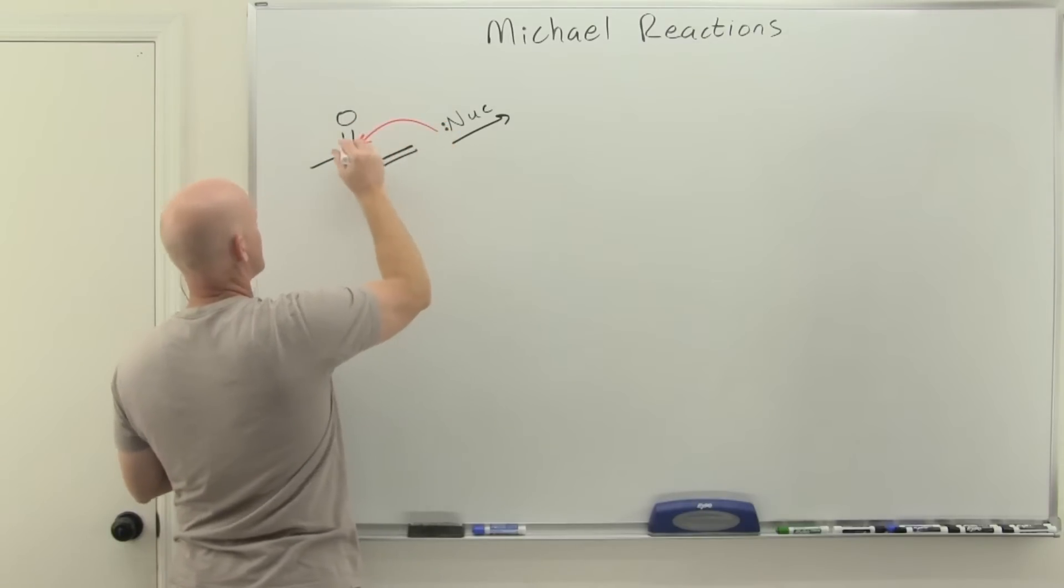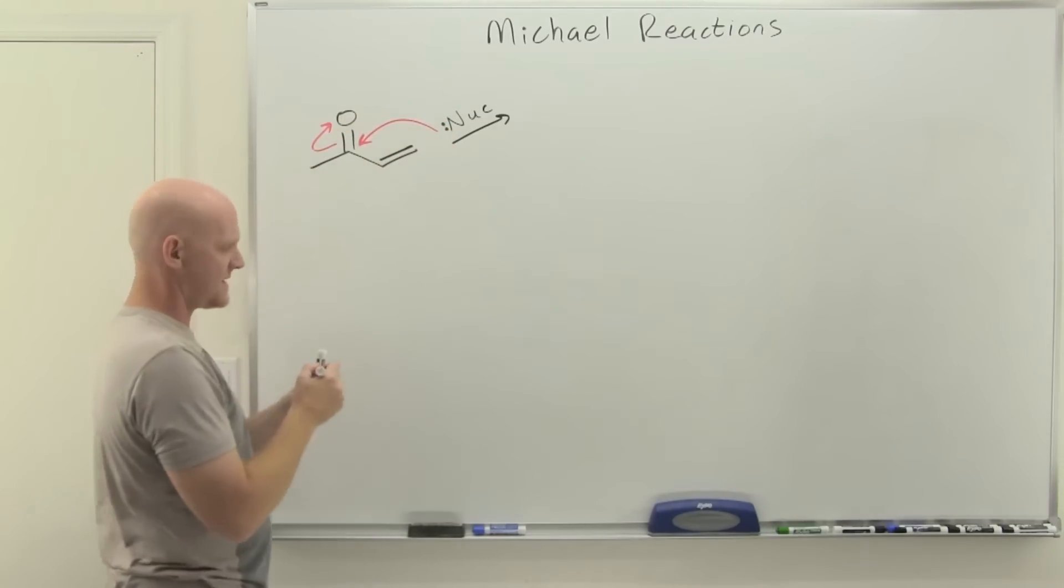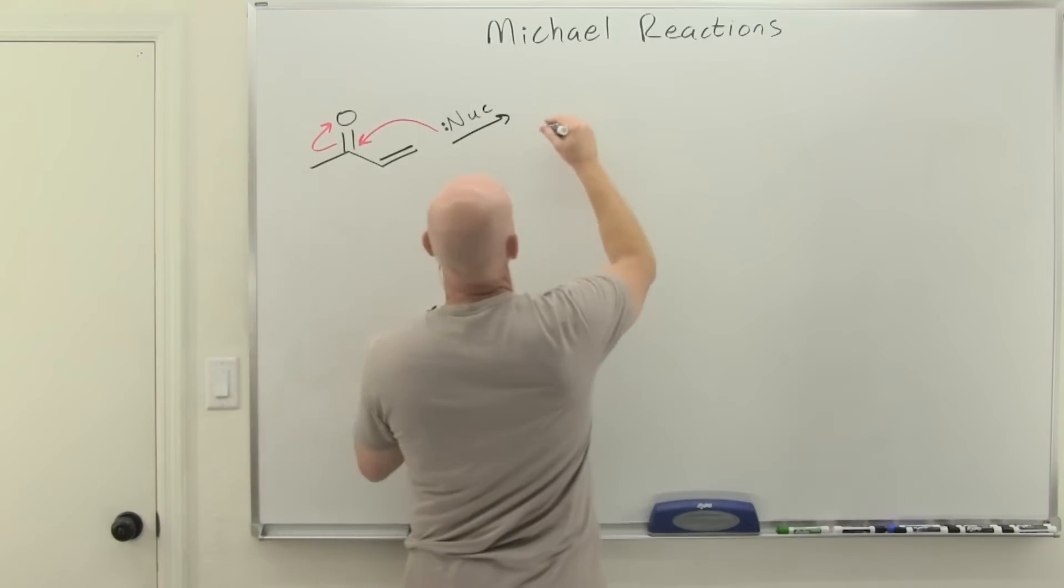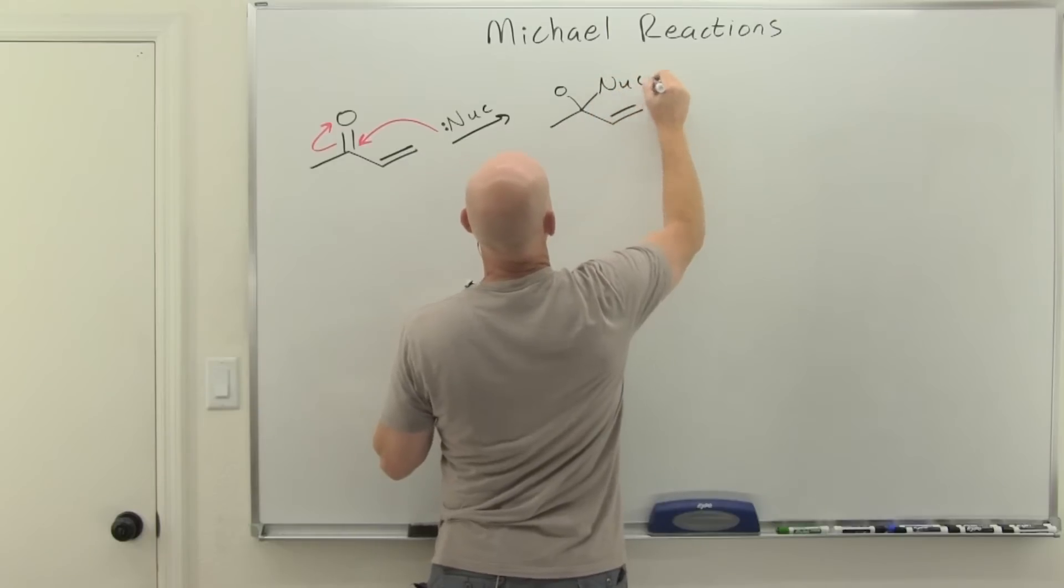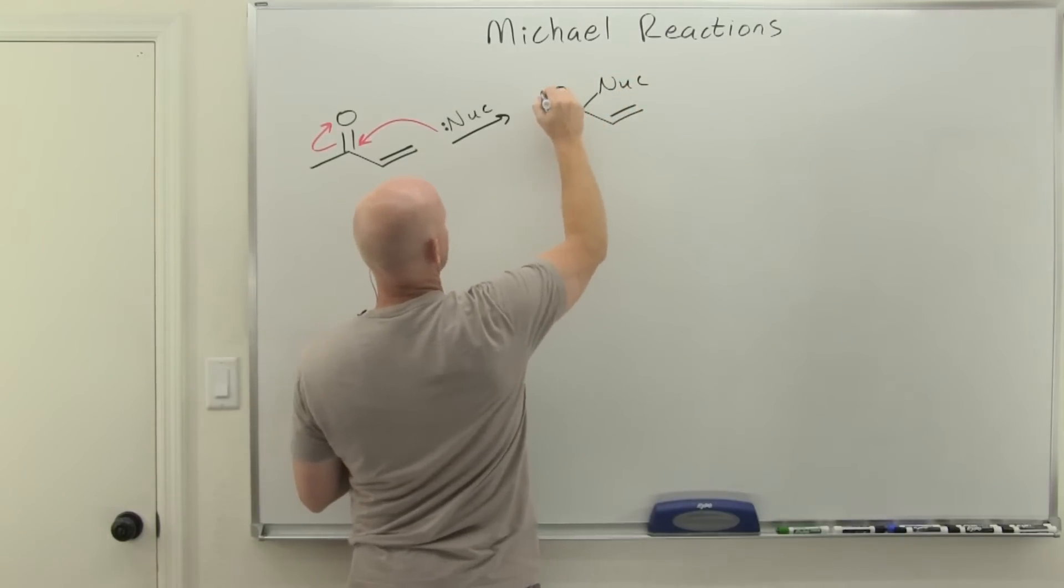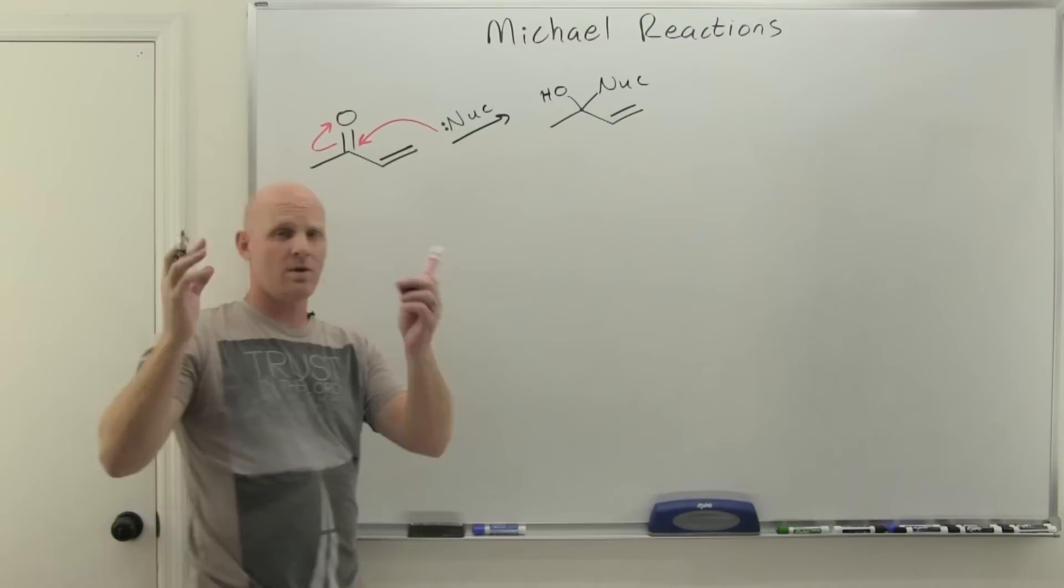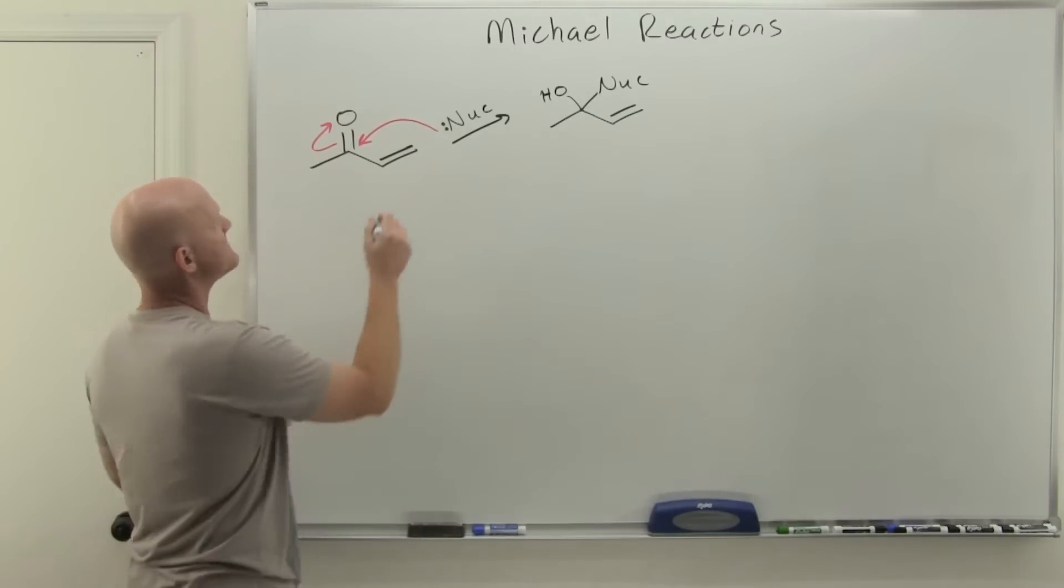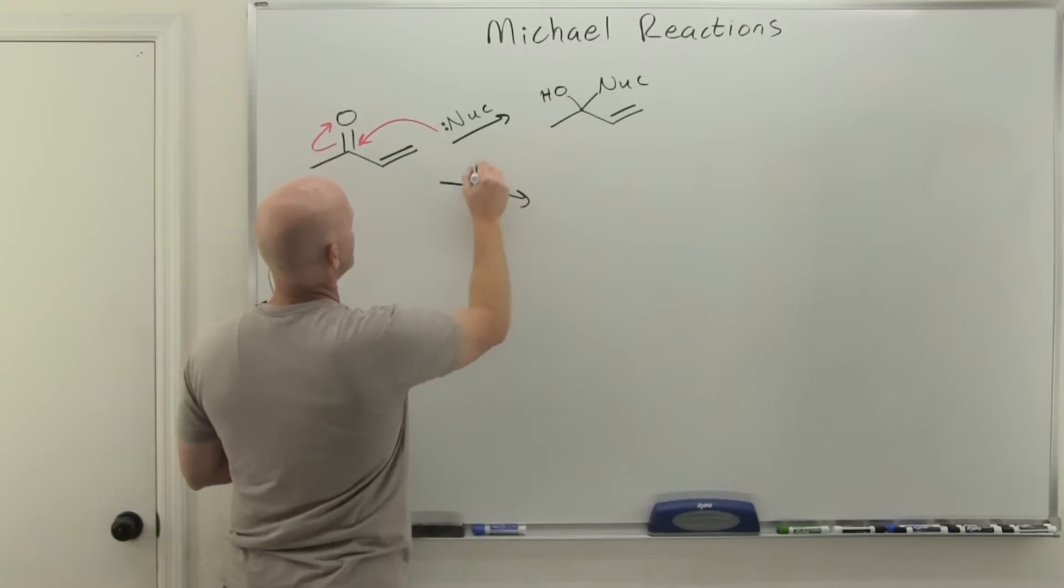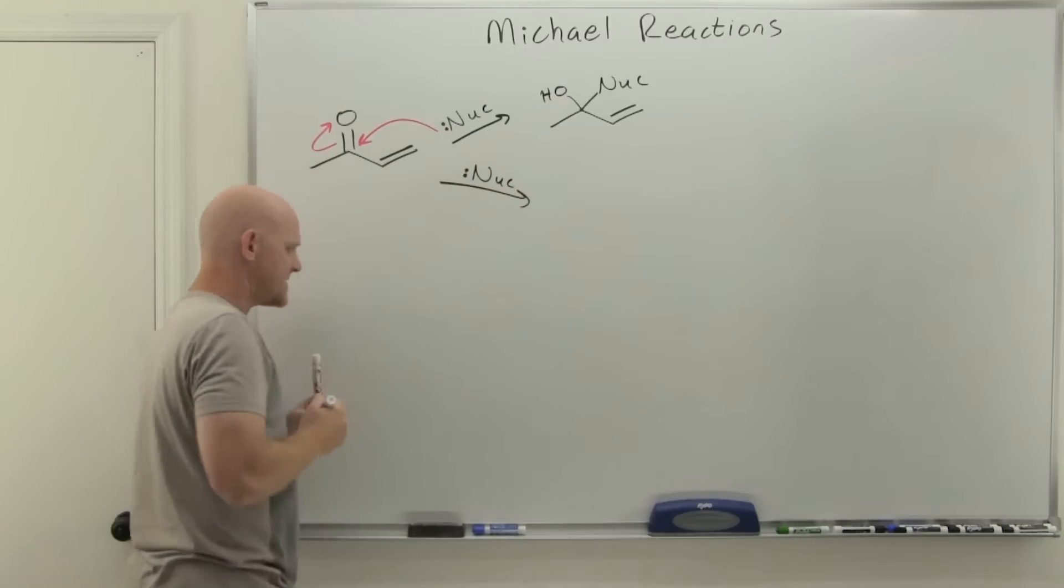Normally when we see a ketone, we think it's electrophilic at that partially positive carbonyl carbon, and that's totally true. Some nucleophiles are going to do exactly what we'd expect and attack that carbonyl carbon, doing nucleophilic addition, and then this oxygen gets protonated to form an alcohol.